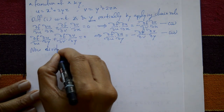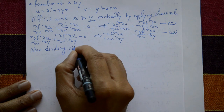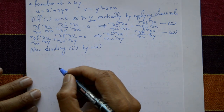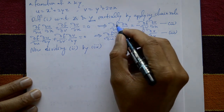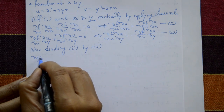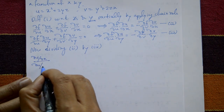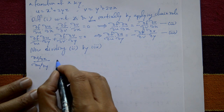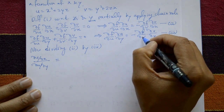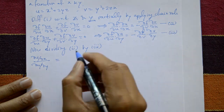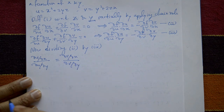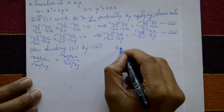Now divide equation number two by equation number three. On the left-hand side, ∂f/∂u and ∂f/∂v cancel, leaving (∂u/∂x)/(∂u/∂y). On the right-hand side, ∂f/∂φ cancels as well, leaving (∂φ/∂x)/(∂φ/∂y).